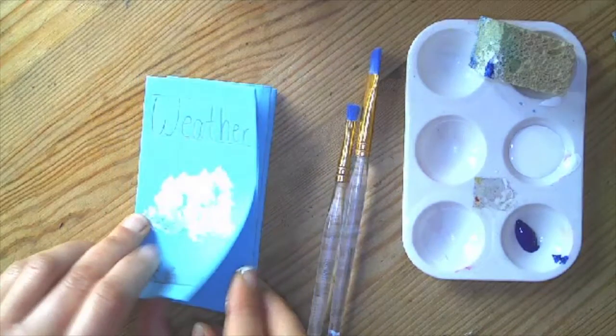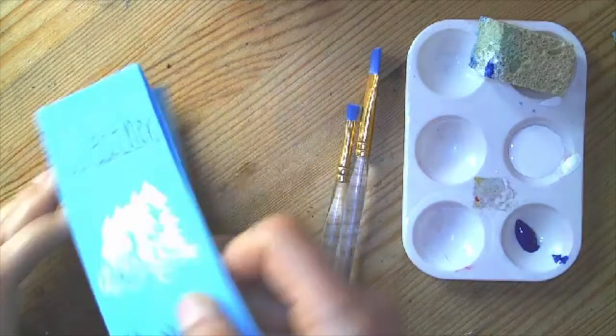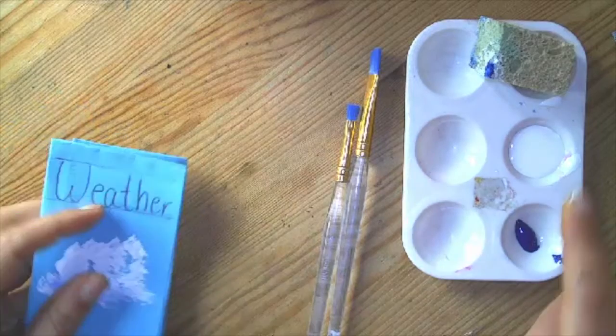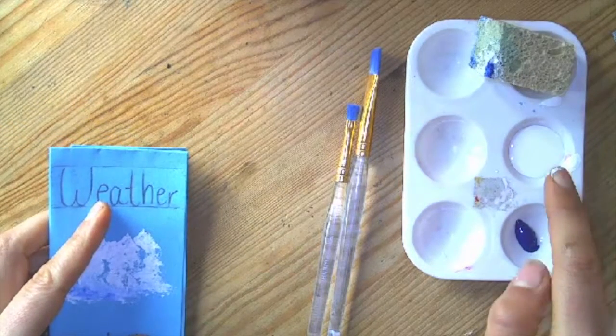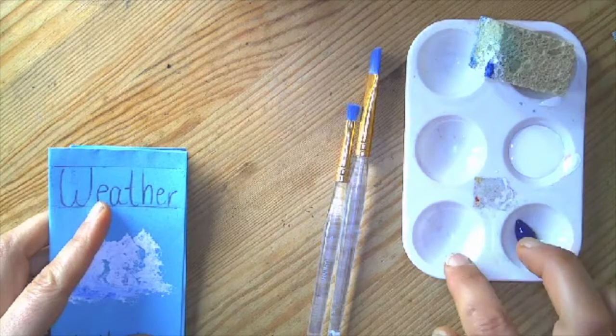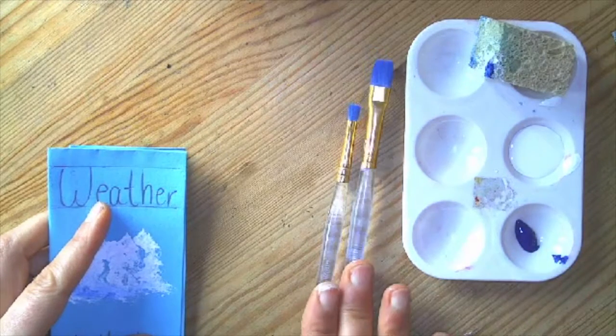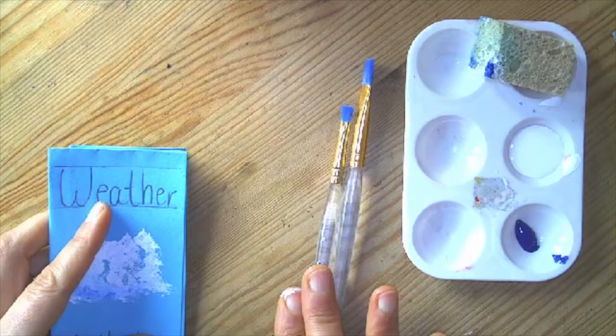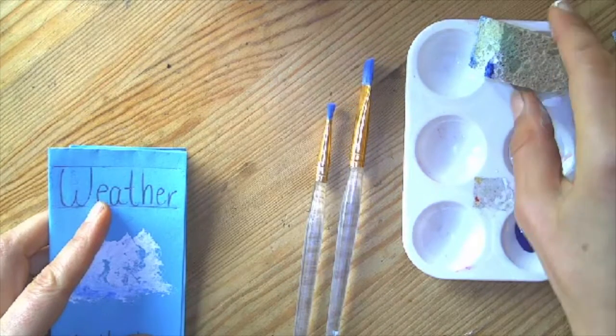So once again, you've got your booklet, it opens up, and you're going to need a little palette with white tempera paint, blue tempera paint. You don't need much blue. You can also use a little bit of black, a flat brush, and then a smaller skinny brush, and a pre-moistened sponge.